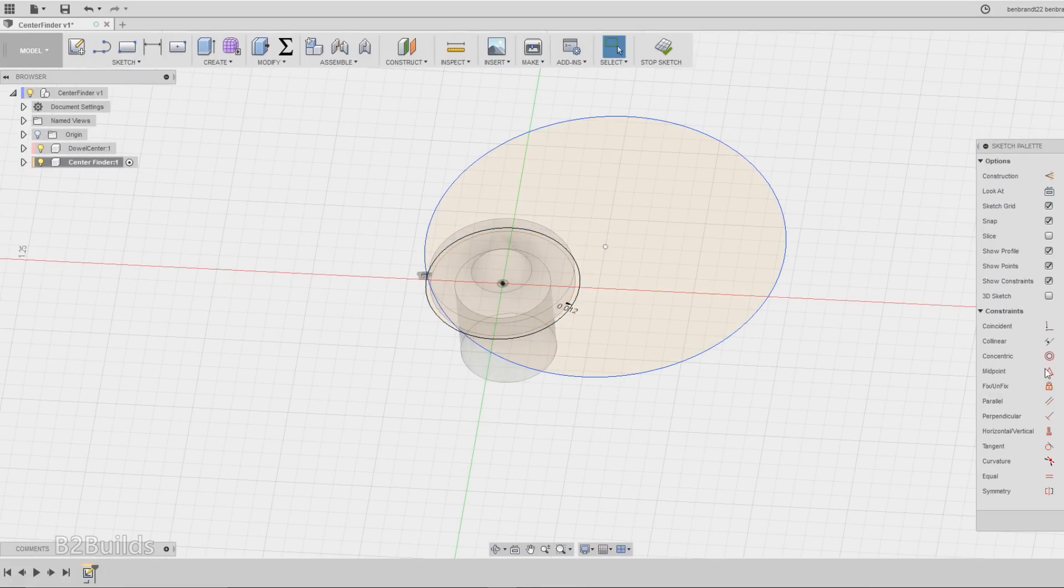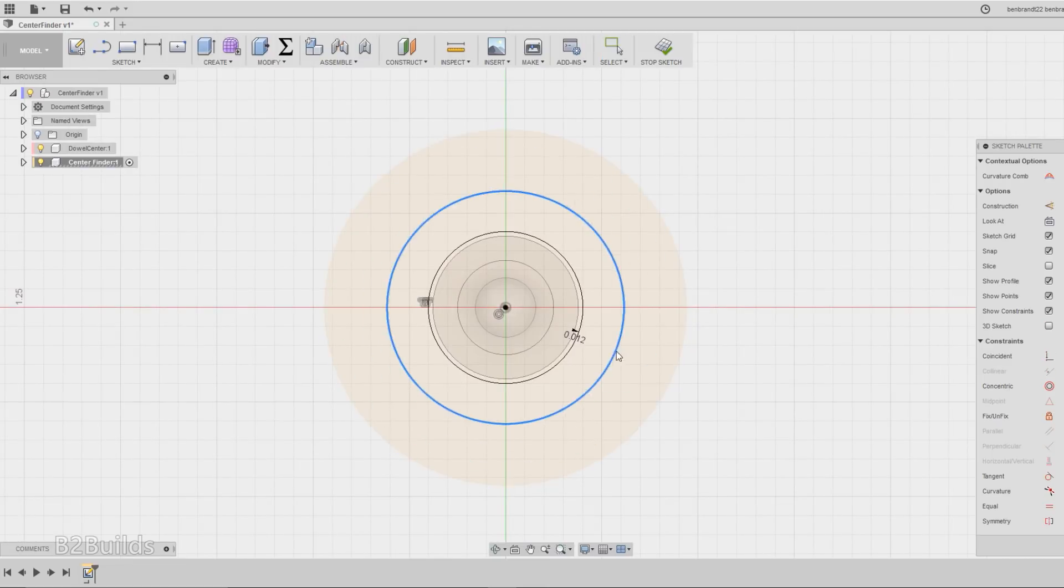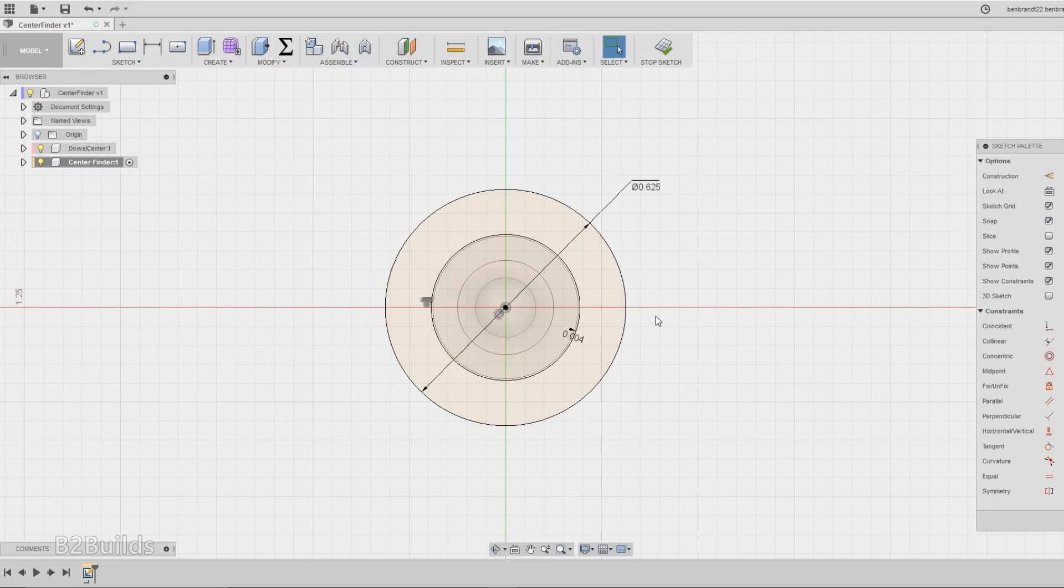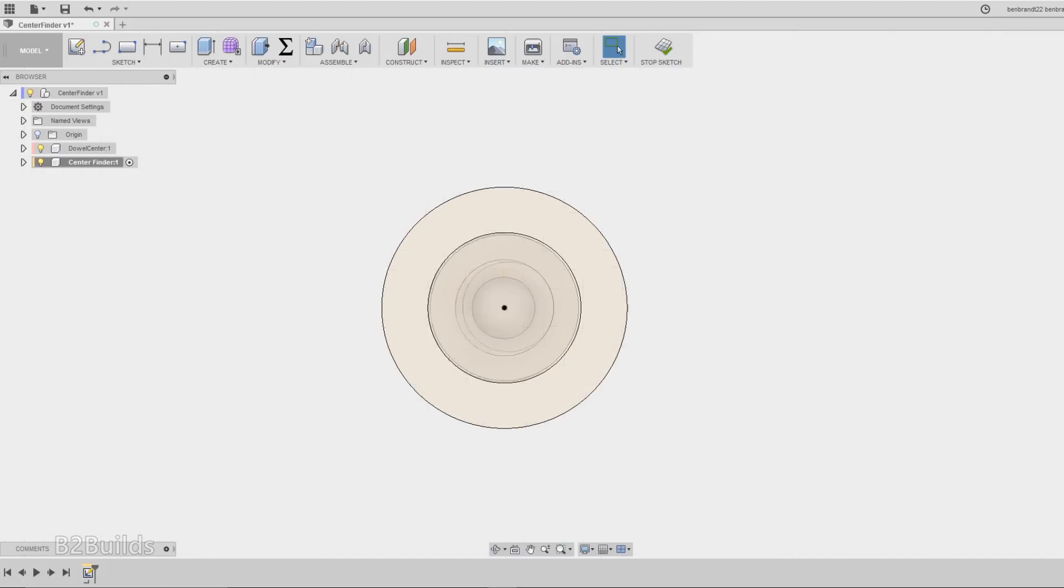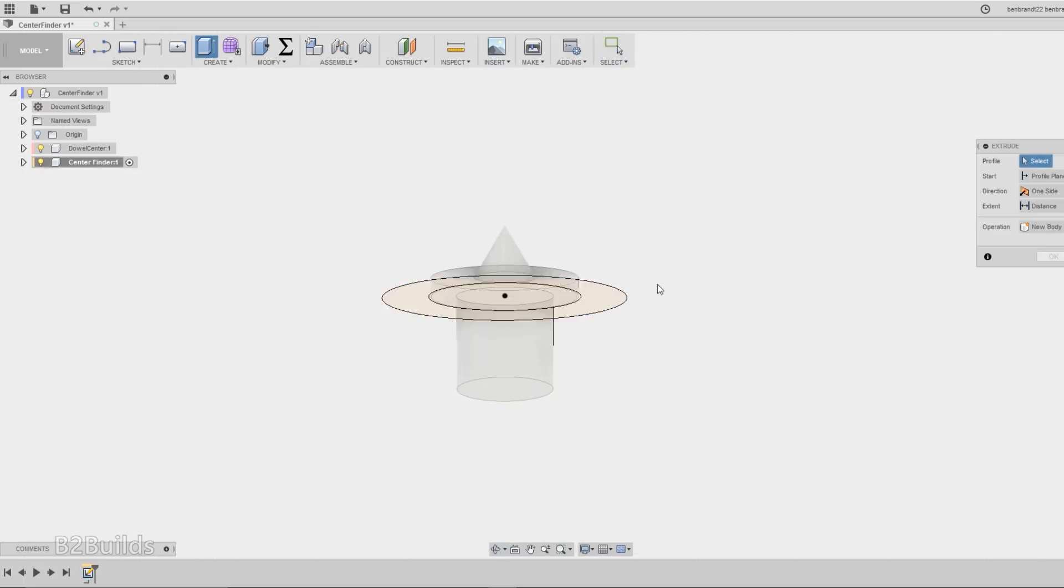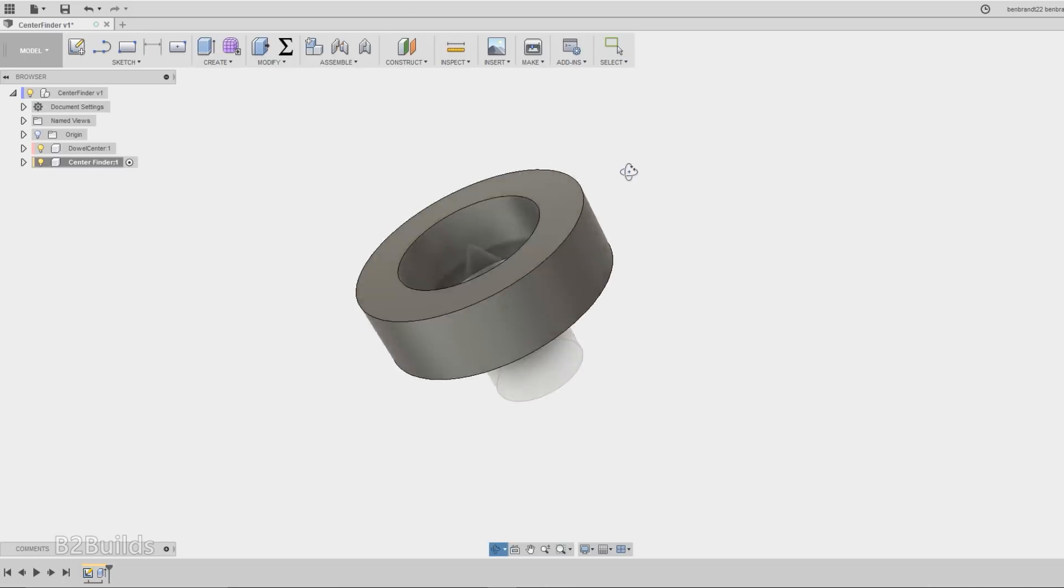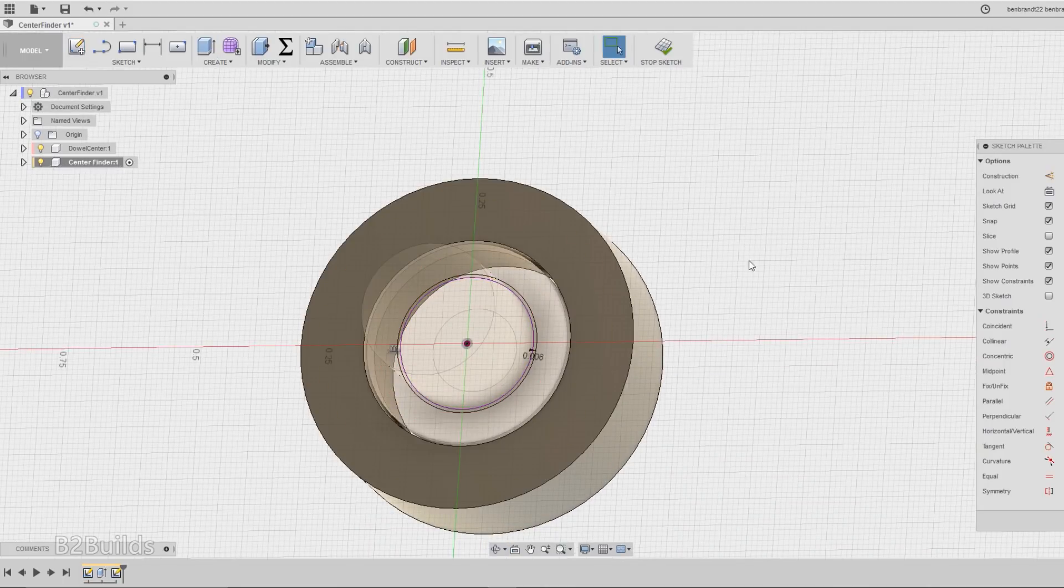Once I had the dowel center modeled, I started off by creating the center hole that it would be sliding through. I want the dowel center to have some room to move in and out as I hammered into the piece of wood and pushed back out for the next one, so I gave it a little bit of clearance around the dowel center and enough room to travel in and out of the board.